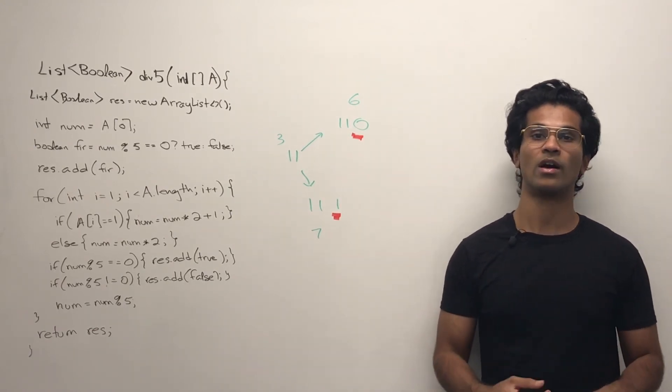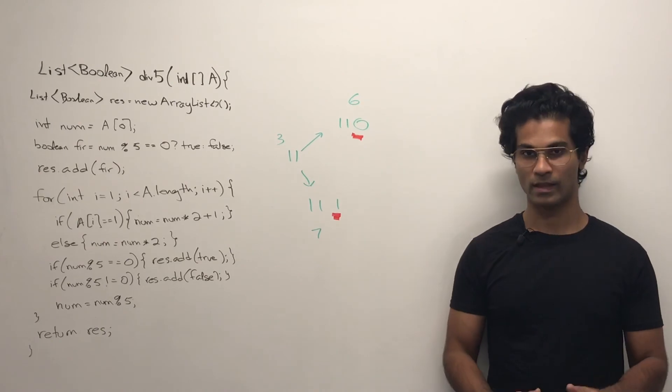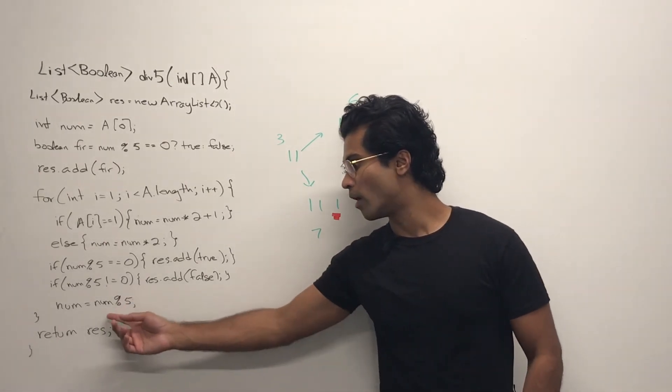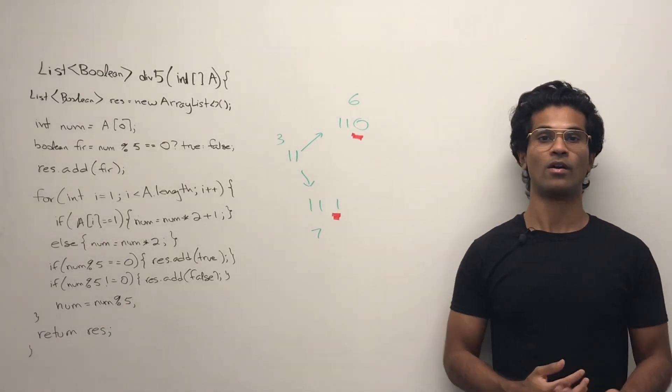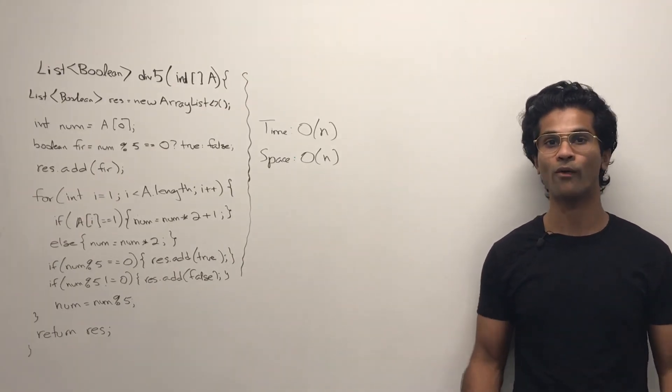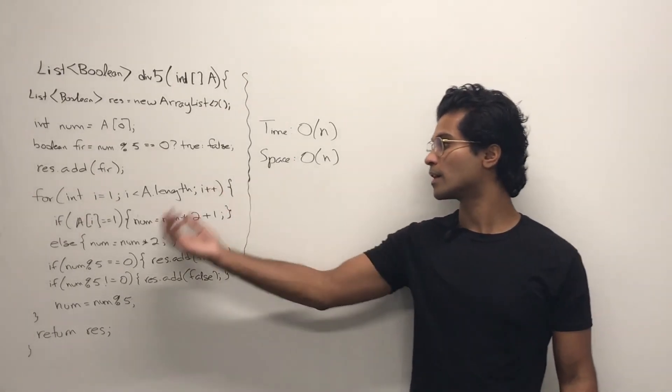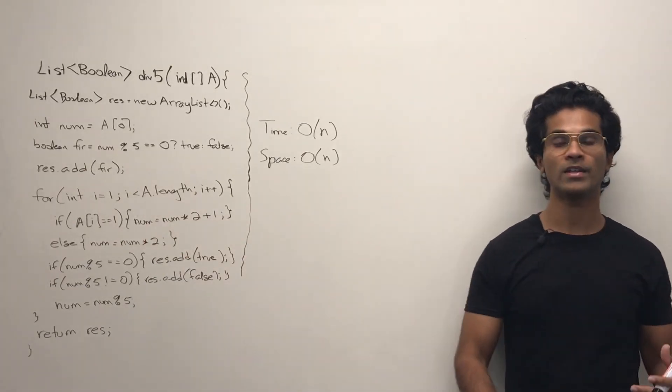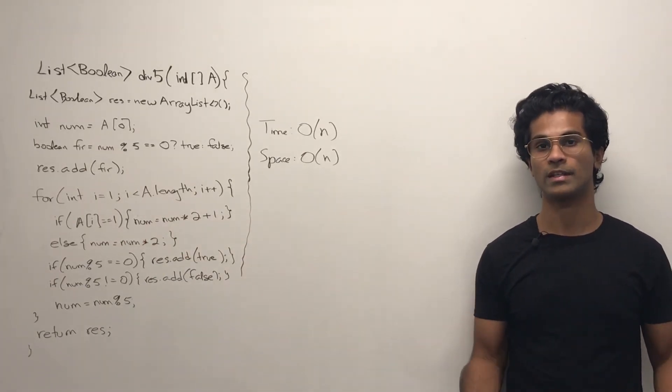And then to make sure that we're not going overflow or anything like that, we just do mod 5 to make our number smaller. The time and space complexity are both going to be O of n because we're iterating through the entire length of the array and we're storing our results in length n.